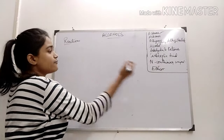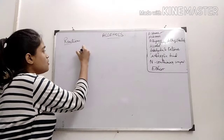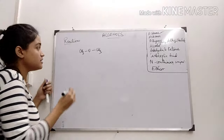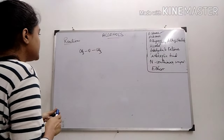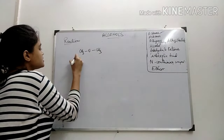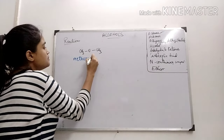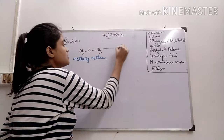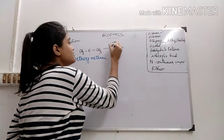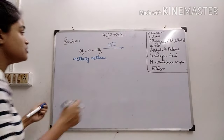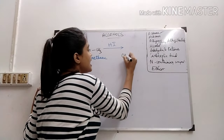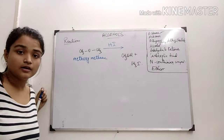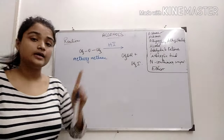From ether, I can get alcohol. This compound is methoxymethane. If I treat this with hydrogen iodide — a halogen acid — this will produce one alcohol and one alkyl halide. So, we can achieve alcohol from ether.